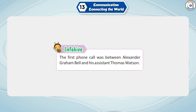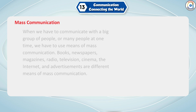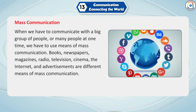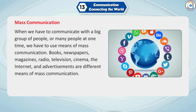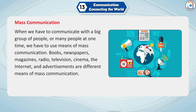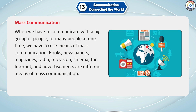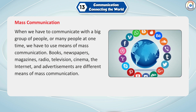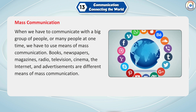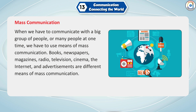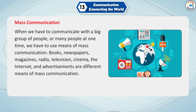The first telephone call was between Alexander Graham Bell and his assistant Thomas Watson. When we have to communicate with a big group of people or many people at one time, we have to use means of mass communication. Books, newspapers, magazines, radio, television, cinema, the internet, and advertisements are different means of mass communication.